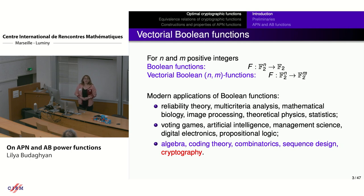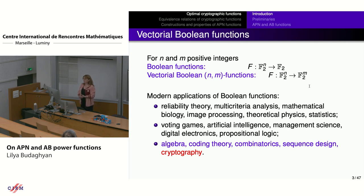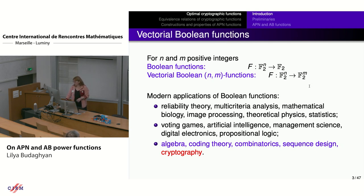For n and m positive integers, Boolean functions are functions from the n-dimensional vector space over the field F2 into F2 — that is, they take vectors of length n of zeros and ones and map them into 0 or 1. Vectorial Boolean functions, or n-to-m functions, are functions from the n-dimensional vector space over F2 into the m-dimensional vector space over F2. Boolean functions were introduced in the end of the 19th century by George Boole for the needs of mathematical logic, but from the mid 20th century their techniques became essential for many applications.